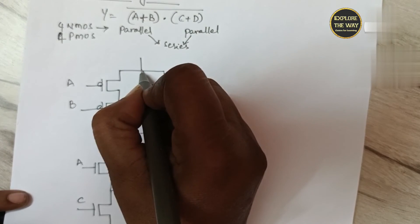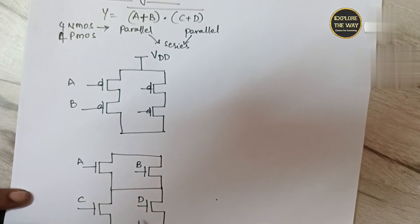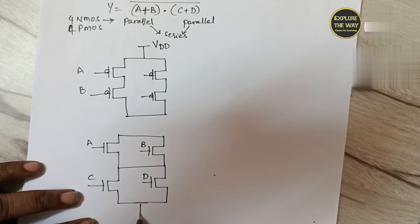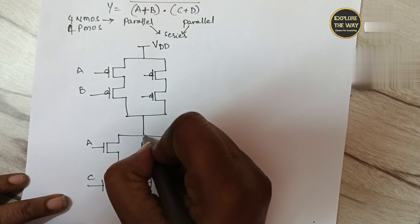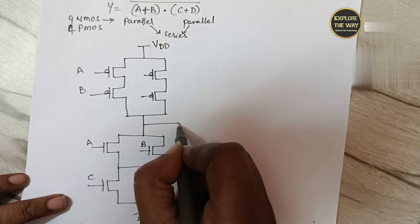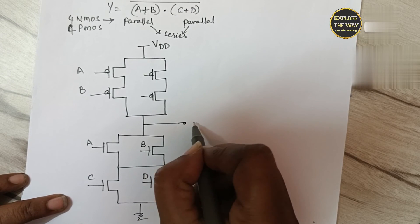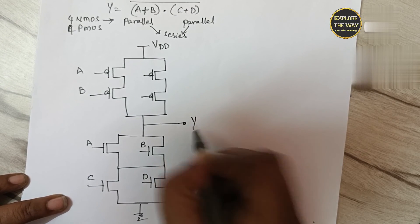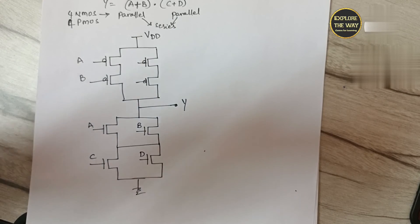The pull-up network should be connected to VDD. The pull-down network should be connected to ground. These 2 networks are connected like this. This is the output. This is the OAI gate.